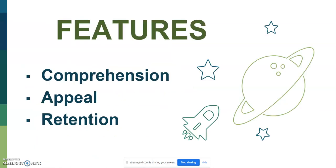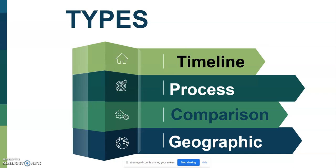Some specific features which should be present in infographics: the infographic must be comprehensible — the viewer should be able to understand the information embedded in it. Second, the infographic should have a good color combination and aesthetic sense. And the infographic should be easily retainable. Different types of infographics include timeline, process, comparison, or geographic infographics.